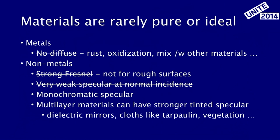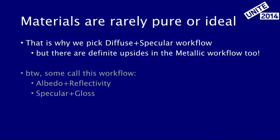Rust, oxidation, mixing of different materials — that's what makes metals look different. Also, the Fresnel being very strong on edges is only true for polished objects. Once you have a very rough surface, the Fresnel actually starts to die out. For very rough surfaces, you won't have any reflectivity on the edge. That's quite easy to see in real life. That is the reason why we have in our standard shader a so-called diffuse-specular or albedo-reflectivity, or specular-gloss workflow. We picked this workflow because it allows use of scan data easier and allows us to create rusty metals and fabrics.